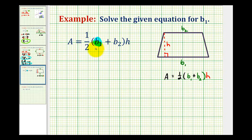And this does happen to be the formula to determine the area of a trapezoid where B sub one and B sub two are the lengths of the two parallel sides and H is the height.